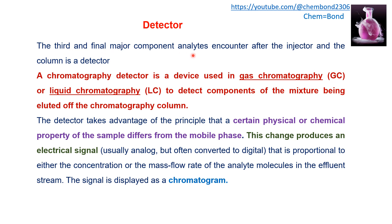Detectors used in gas chromatography. The detector is the third and final major component encountered after the injector and column. There are three basic components of a chromatographic system: the injector, the column, and the detector. A detector is a device used in GC and LC to detect components of a mixture being eluted off from the chromatographic column, moving towards the detector with the help of the mobile phase.